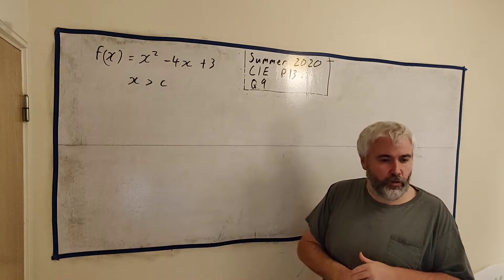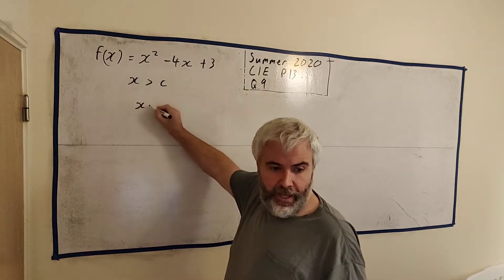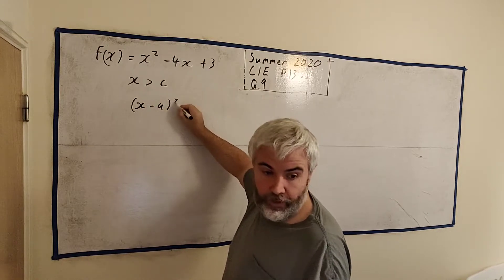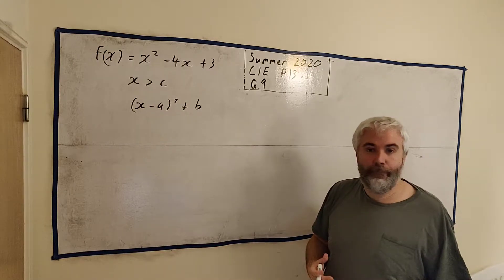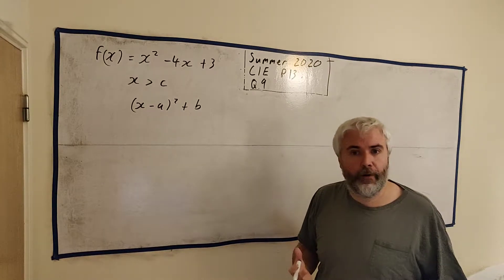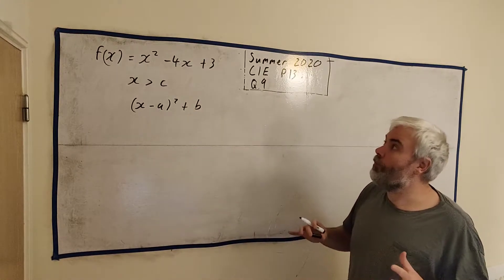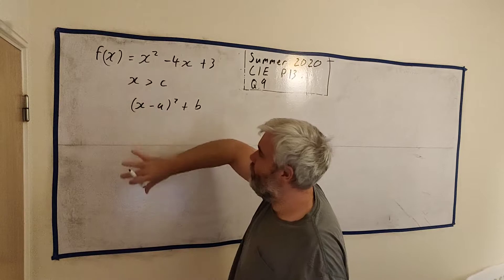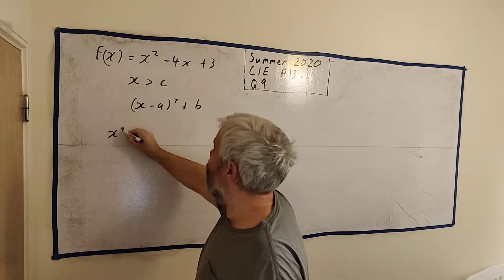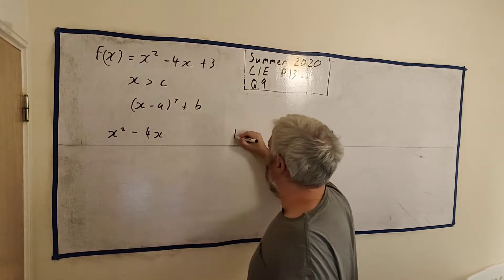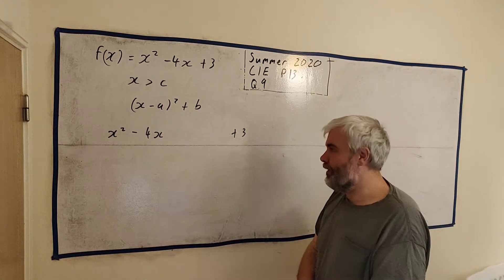So the question first asks us to express f(x) in the form (x-a)² + b. It's a very common question asked in most exams — it's completing the square. I won't explain it fully; I'll just ask you to look up completing the square, but hopefully you'll be able to follow along anyway. Let's write f(x) out again: x² - 4x + 3.